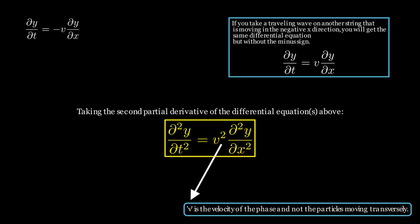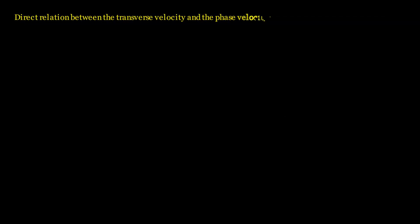Taking the first partial derivative of the traveling wave with respect to time gives us the transverse velocity of the particles oscillating about the mean position. Now here's another treat for you. Let me derive a direct relation between transverse velocity and phase velocity.